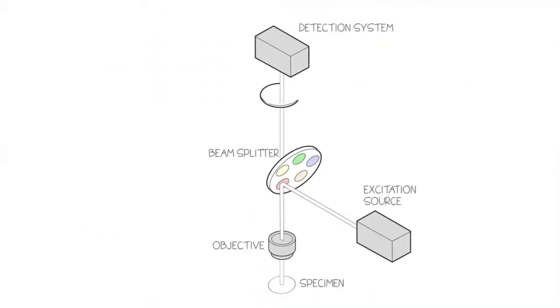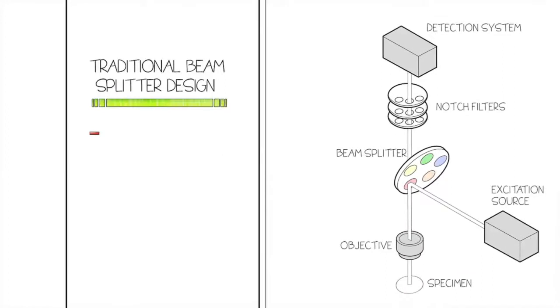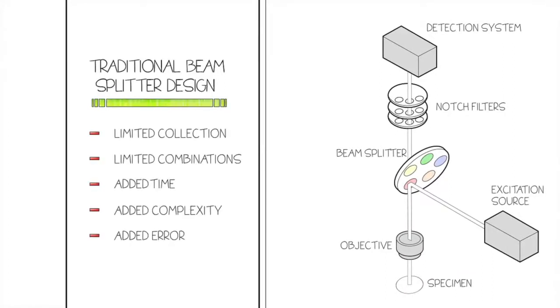Furthermore, switching filters for sequential imaging takes time away from important experimental dynamics, and every additional filter adds complexity to the system. Additionally, switching filters provides the potential for selection error.